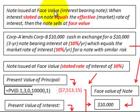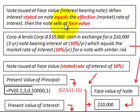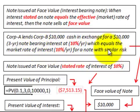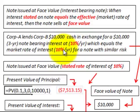Our note is issued at its face value and is interest-bearing. When the interest stated in the note equals the effective market rate of interest, the note sells at its face value. In our example, Corporation A lends Corporation B $10,000 in cash in exchange for a $10,000 three-year note bearing interest at 10%, which equals the market rate of interest of 10% for a note with similar risk. So the stated rate and the market rate are both 10%.